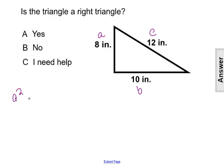Let's test a squared plus b squared equals c squared. If we substitute in our known values, we know a equals 8, b equals 10, and c equals 12. So we're testing if 8 squared plus 10 squared equals 12 squared.